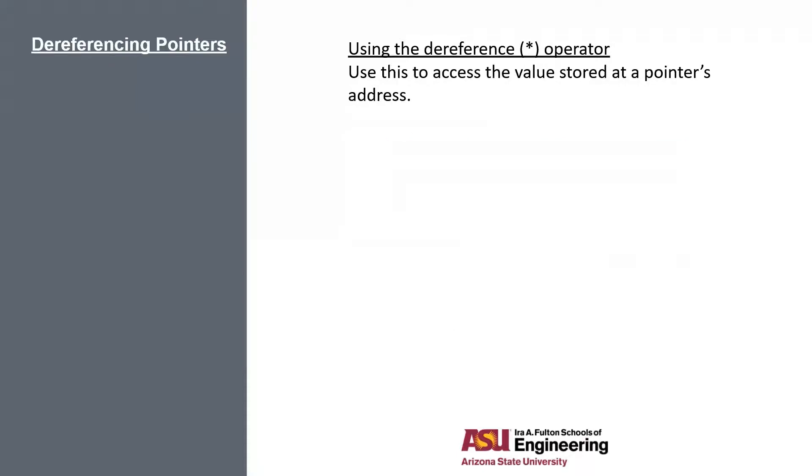Now another operator that's really important in pointers is the dereference operator, which is the star. It basically does the opposite of what the address of operator does. The ampersand takes a variable and gives you the address. But the star takes an address and gives you the variable. So dereferencing will take a pointer and return the variable.